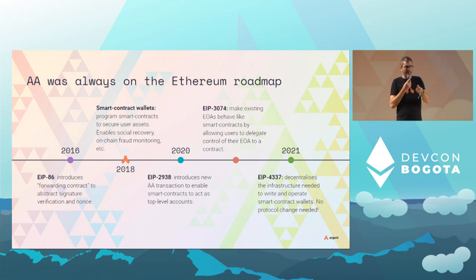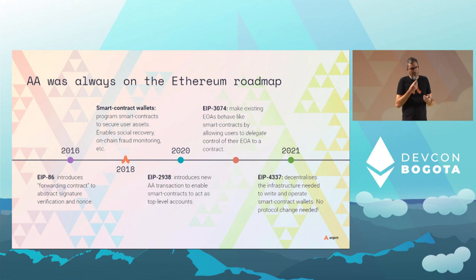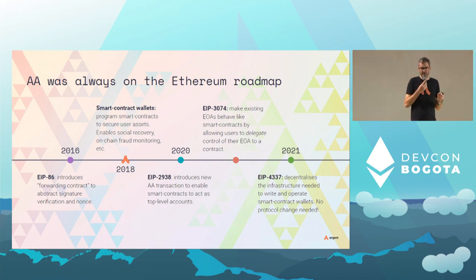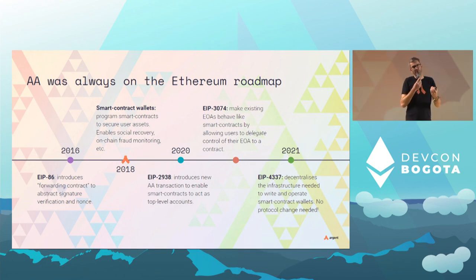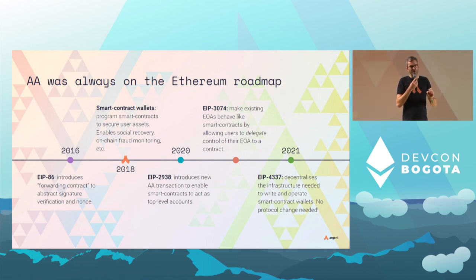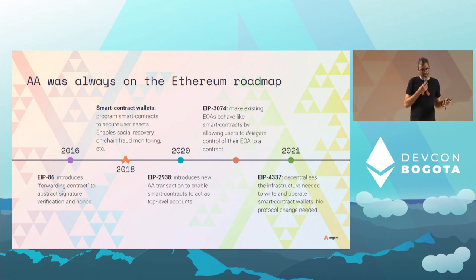At Argent and Gnosis Safe we started building smart contract wallets in 2018, which were basically a form of account abstraction — solving UX problems for self-custody using smart contracts at the application layer, with features like social recovery and monitoring. In 2020 there was a new EIP led by Vitalik, EIP-2938, to add a new transaction type letting smart contracts become first-class top-level accounts. Soon after came EIP-3074, which took the opposite approach: enabling some smart contract features on existing EOAs.